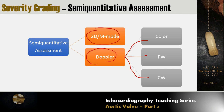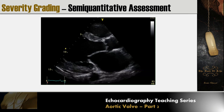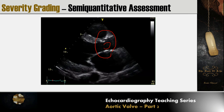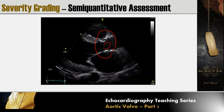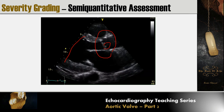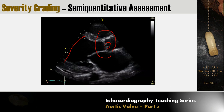Starting with 2D assessment, we look at the aortic valve anatomy for obvious pathology, and we can also see malcoaptation. In chronic severe aortic regurgitation, volume overload on the LV means we expect the LV to be dilated. So LV dimensions — both systolic and diastolic — are important factors to consider in assessing aortic regurgitation.